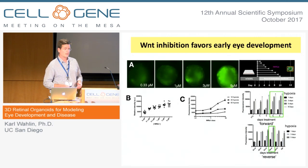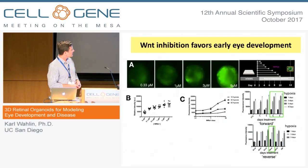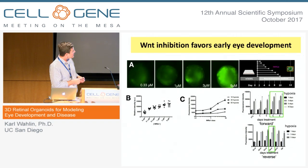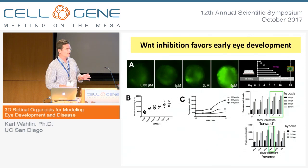Wnt signaling is also very important. By blocking Wnt, we can promote anterior neural development. We've been using a compound called IWR-A1, but we didn't know exactly how long we should be adding it or what doses, because we didn't have a good readout. In this system, we did a dose response and, rather than the 3 micromolar we previously used, we now use a slightly higher concentration. We were also able to test timing, which is very important for early development — being off by even a few days could severely impact how organoids develop.